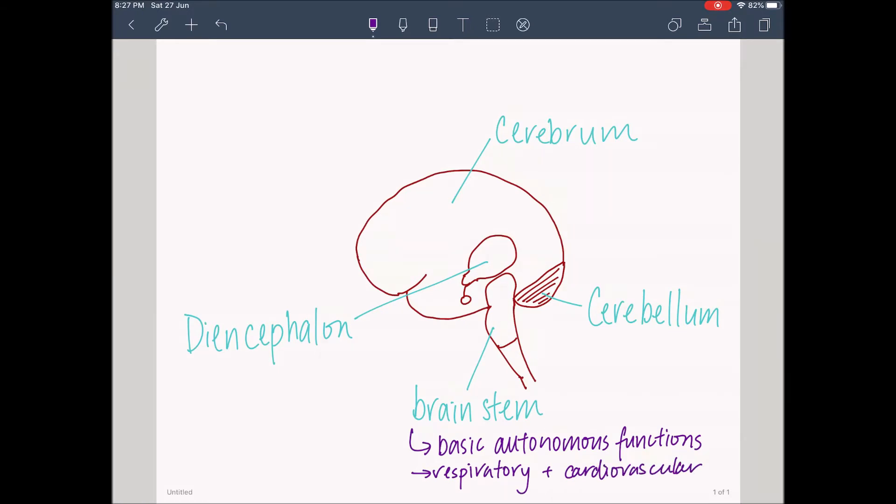The diencephalon relays sensory information between the brain's regions. It contains the thalamus, which is responsible for the perception of sensation, like pain, temperature, and pressure.